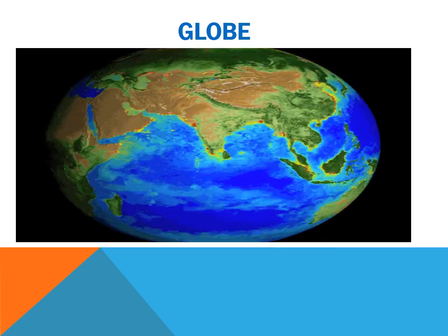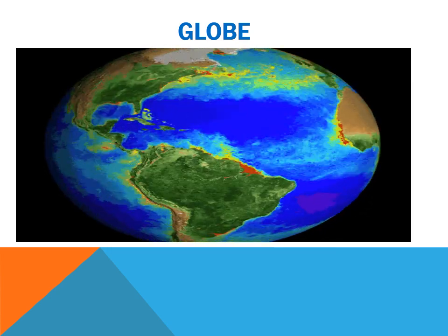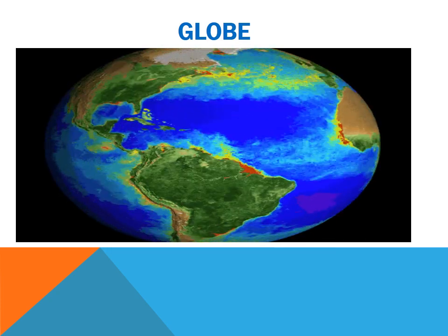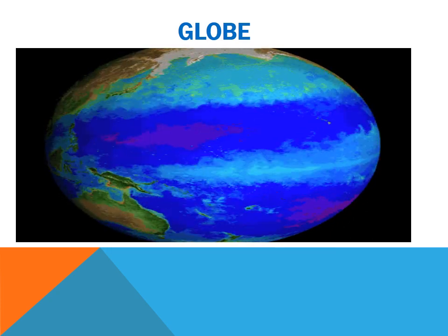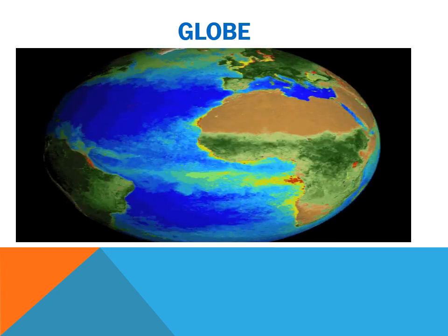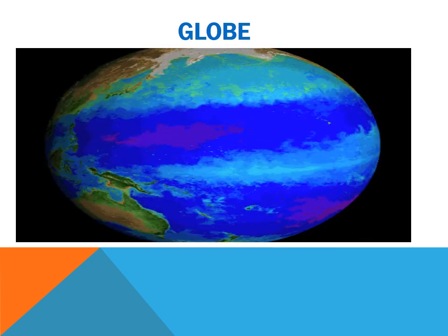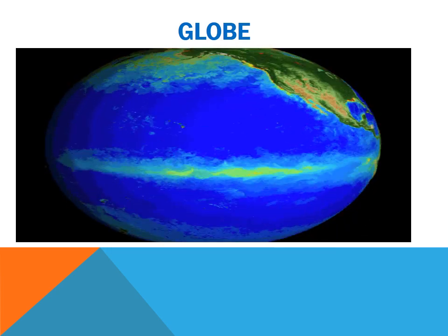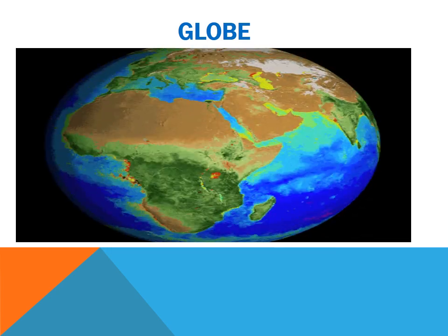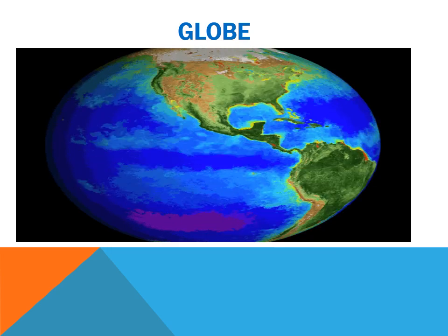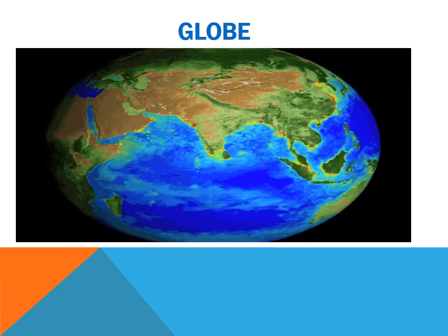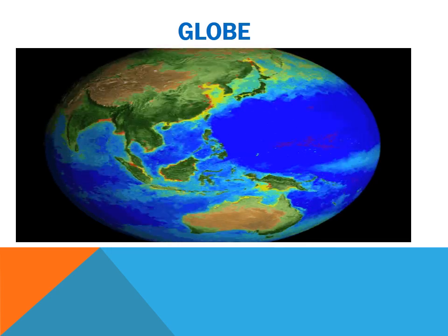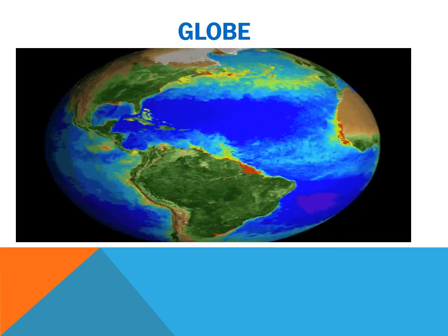Globe. Children, a globe is an exact model of the earth. It represents the earth in a simple and accurate way. It helps us to see the distribution of continents and oceans on the earth. A globe is a small three-dimensional model of the earth — spherical, slightly flattened at the poles and bulging at the equator. It is mounted on an axis so that it can be rotated freely. Just like the earth, the lines of latitude and longitude are drawn on the globe. The shapes of the continents and oceans are shown quite accurately.